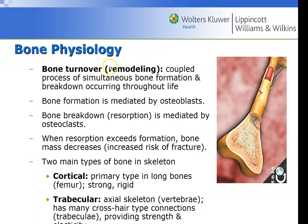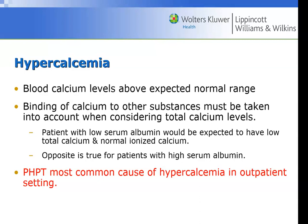Bone turnover and remodeling are constantly happening because osteoblasts and osteoclasts always need something to do. There is dense cortical bone around the outer edges of long bones, and most other bones have a dense outer structure. Inside is spongy-looking bone called trabeculae — the actual bone part with spaces in between.